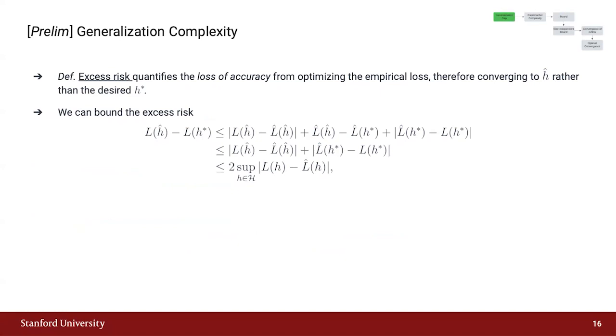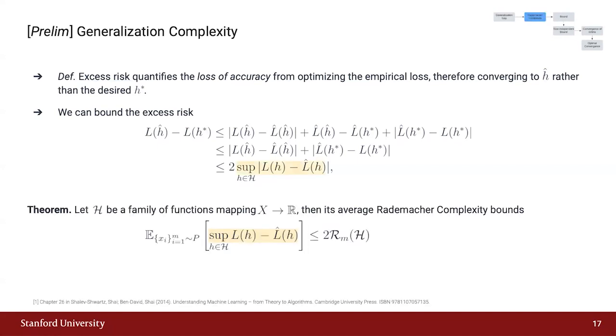Generalization complexity refers to the measure of how well a machine learning model training on a specific dataset performs on unseen data. We can bound this quantity as displayed here. Following a statistical theorem, this term can be bounded by the Rademacher complexity, which quantifies the model's ability to generalize and avoid overfitting.